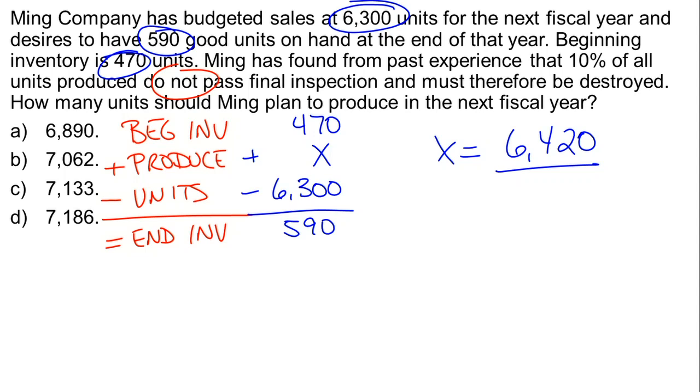We were lucky here. If I'd been making this question, I probably would have made 6,420 one of the choices. But since it's not the choice, we know that something still needs to be done, and it comes back to this 10%. They tell us that 10% of all units produced do not pass final inspection.